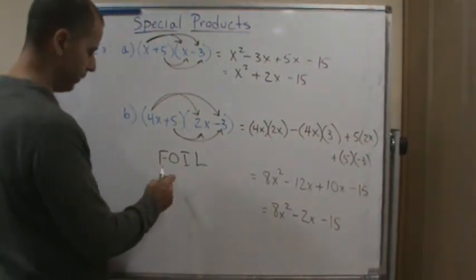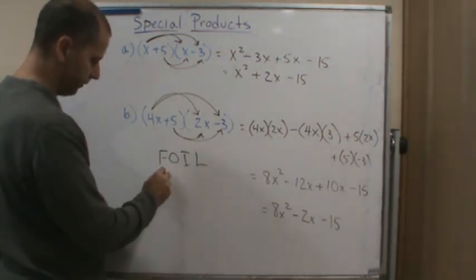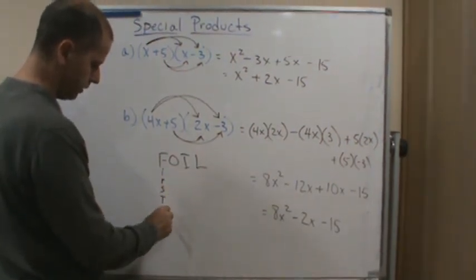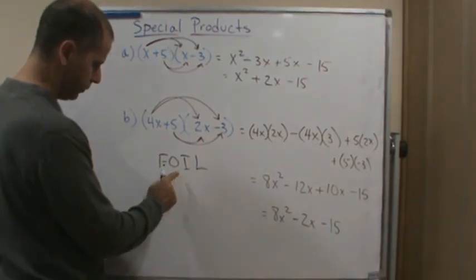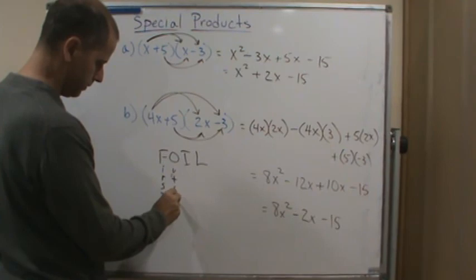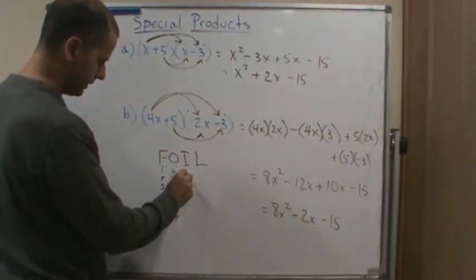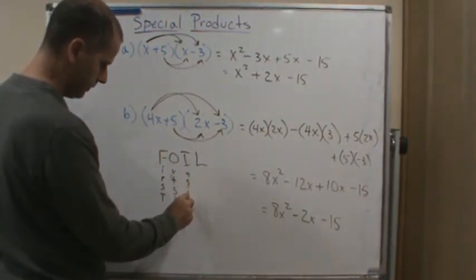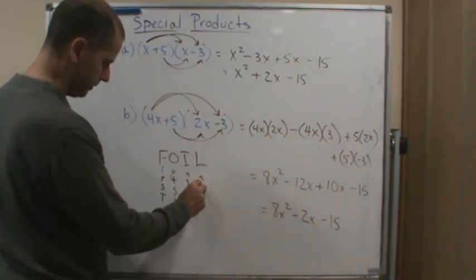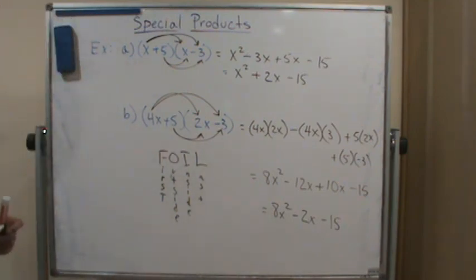FOIL is an acronym: F stands for First, O for Outside, I for Inside, and L for Last.